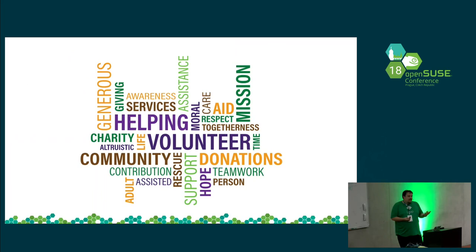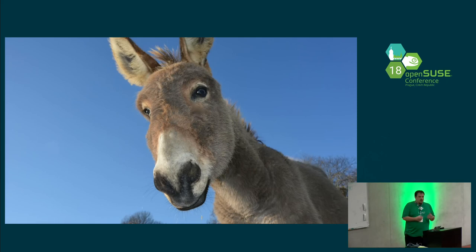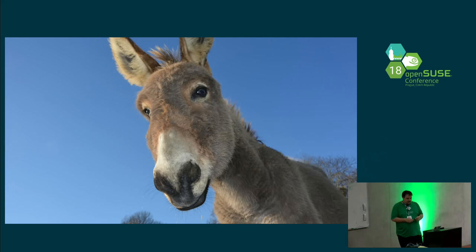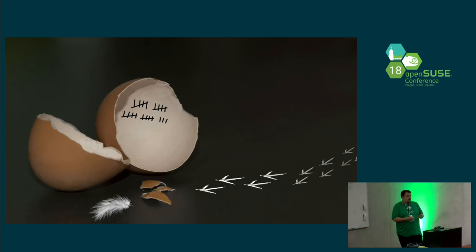Even if you tried to tell contributors what you wanted them to do, quite often they're like donkeys — they're stubborn and won't do it anyway. In OpenSUSE we don't try to force people to work on specific features. We just show the situation as it is and hope people come in and fix things. New contributors should be able to start from day one as a walking, talking part of the project — get involved, get started, and go straight to being an active contributor.